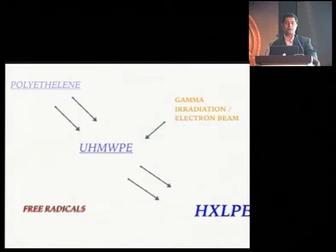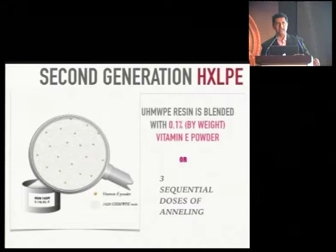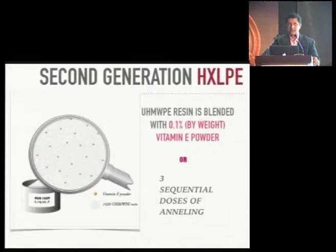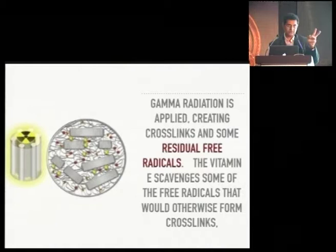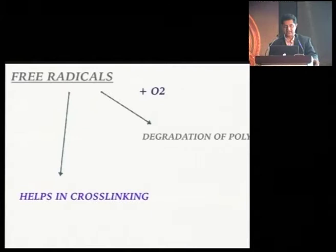To offset these free radicals, they introduced the addition of vitamin E at 0.1% by weight, added by a process called annealing. This gave rise to the second generation of highly cross-linked poly blended with vitamin E. When gamma radiation is applied, residual free radicals are produced, and vitamin E scavenges these residual free radicals, helping to reduce them. The free radicals help in cross-linking, but when exposed to atmosphere they cause degradation of the poly.